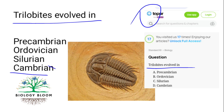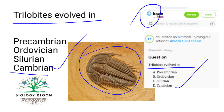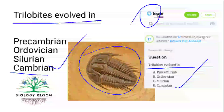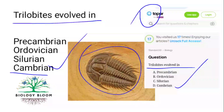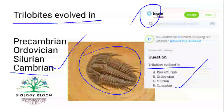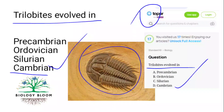Trilobites evolved in the Cambrian period. These are the trilobites and they evolved during the Cambrian period. You can see how it was copy-pasted as it is — slightly paraphrased — actually, not even paraphrased. Even the options are the same.